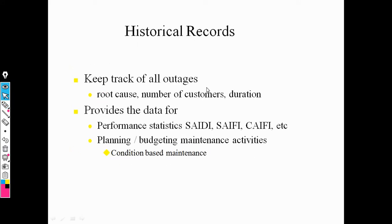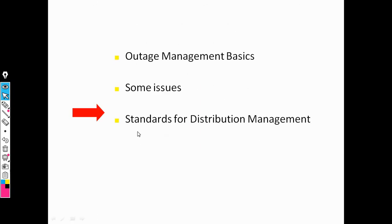Historical records mean that previous records of the customer are very important. We need planning, maintenance, and condition monitoring. Maintenance records are very important for both the customer site and the utility center. Both previous data are important, and we need standards useful for distribution management.